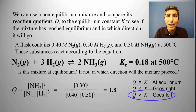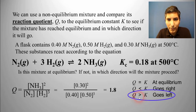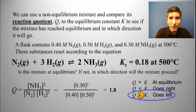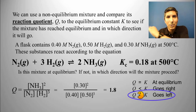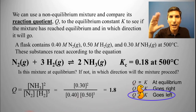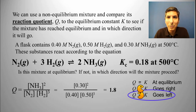A lot of students have trouble keeping all that straight, so here's a helpful trick. Take that greater-than sign and turn it into a little Pac-Man symbol. The Pac-Man is eating in the direction of going left, which tells you the reaction goes to the left. If instead Q had been less than K, the Pac-Man symbol would be facing the other way, eating toward the right. Using that Pac-Man symbol should help you keep all of this straight.